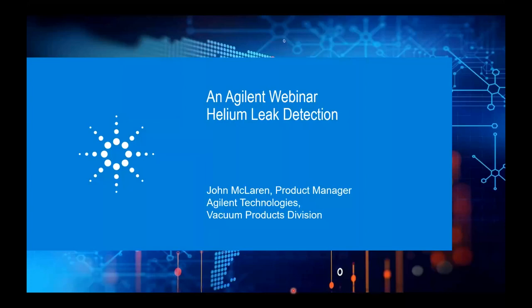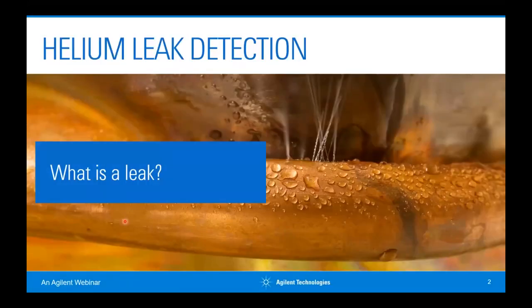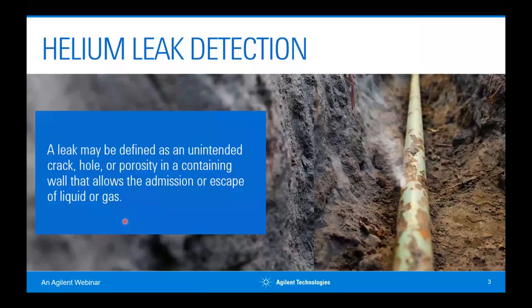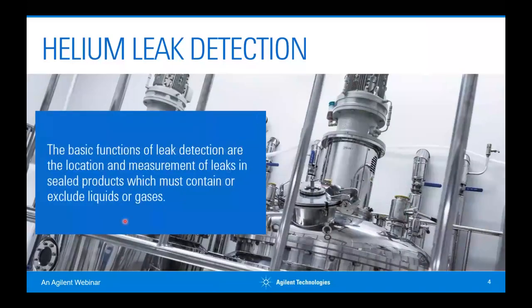I'm assuming everyone is here because they're interested in learning about some type of leak they have to deal with in their product or process. Initially we'll talk about the very basic stuff — what is a leak? The key thing on both of these examples is they're both giving you a very clear visual indication of where the leak is. But generally, in helium leak detection and most leak testing applications, that's the problem: we don't have that visual indication.